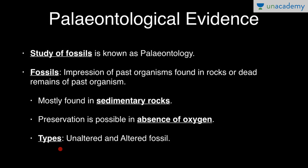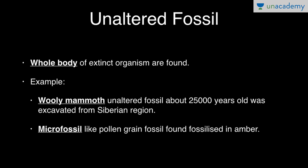We have two types of fossils: unaltered and altered. In unaltered fossils, the whole body of extinct organisms is found — generally in polar ice — with no alteration. Such fossils are rare. For example, a Woolly Mammoth unaltered fossil about 25,000 years old was excavated from the Siberian region.